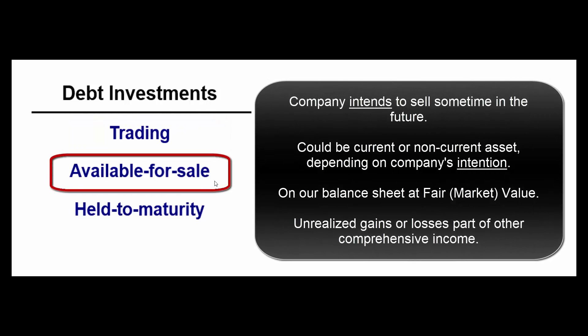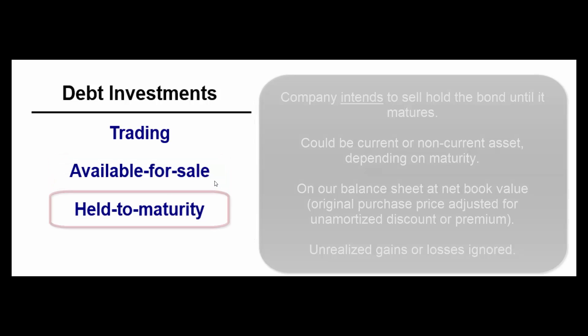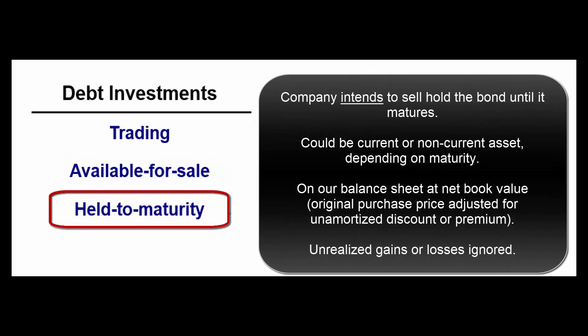Available for sale means we've got some extra cash laying around. We're tired of earning half a percent on our savings account at the bank, so instead we invest in some five, six, or seven percent bonds. We'll sell them when we need the money — we're not actively trading them. And for held to maturity, suppose we know we're going to need $100,000 for a capital project five years from now — we might buy a five-year bond and just hold on to it until it matures.